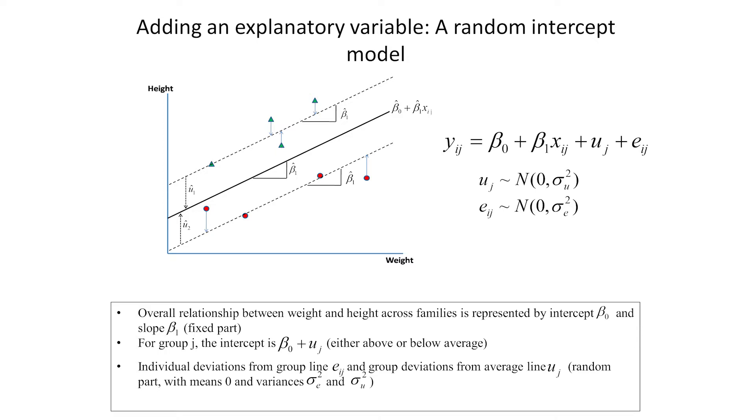Now, β₀ refers to the point where the line crosses the y-axis, and β₁ quantifies the gradient of the line, or how much height increases for a one unit increase in weight.